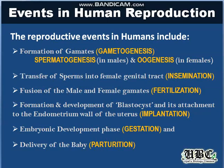To begin with, we have the formation of gametes, also known as gametogenesis — a very important step in sexual reproduction. Gametogenesis is of two types, as we have two different sexes. In males, the process is known as spermatogenesis, and in females, it is oogenesis. The second step is the transfer of the male gametes — the sperms — into the female genital tract, and this is termed insemination.